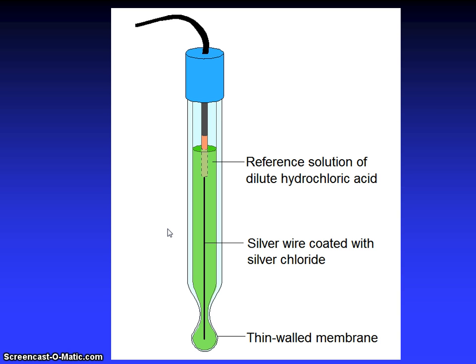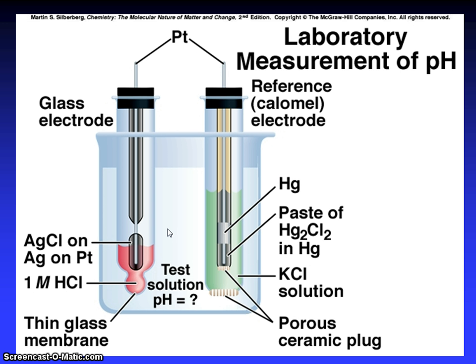Now, you can see the reference solution of dilute hydrochloric acid. Silver wire coated with silver chloride. Thin-walled membrane. This is very important. You have to observe this electrode. Now, friends.